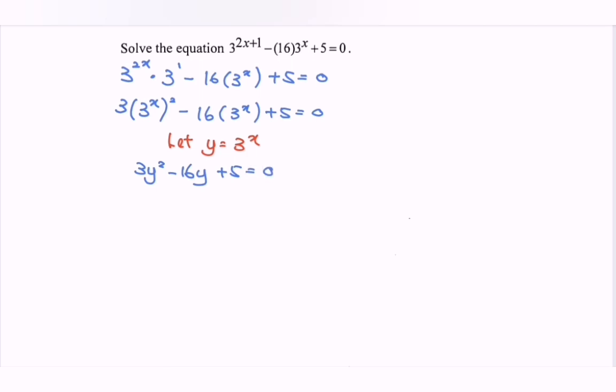Factor the equation: (3y minus 1) times (y minus 5) equals 0.